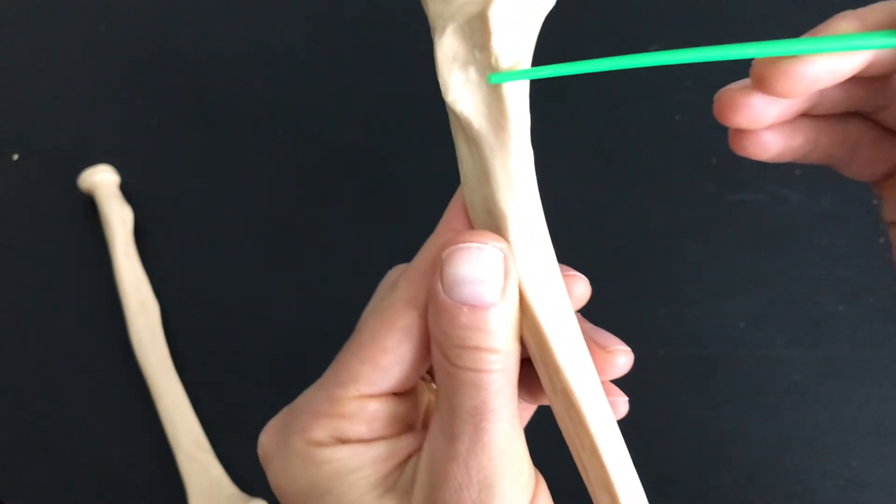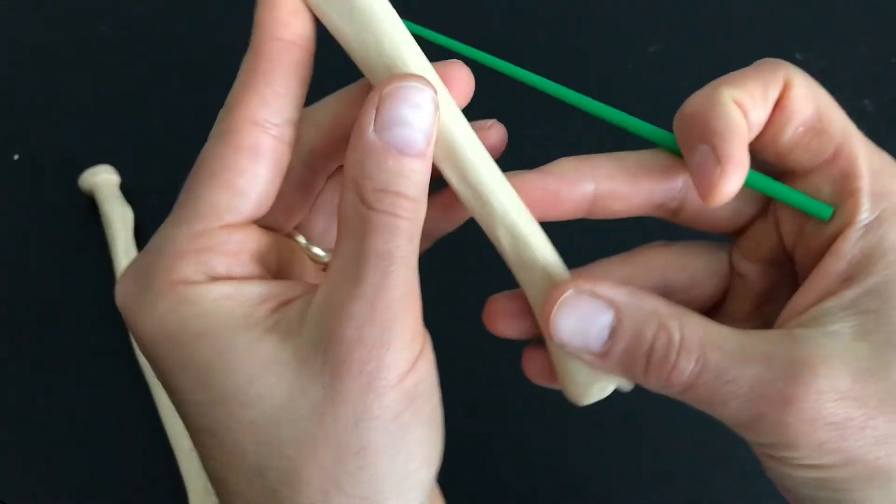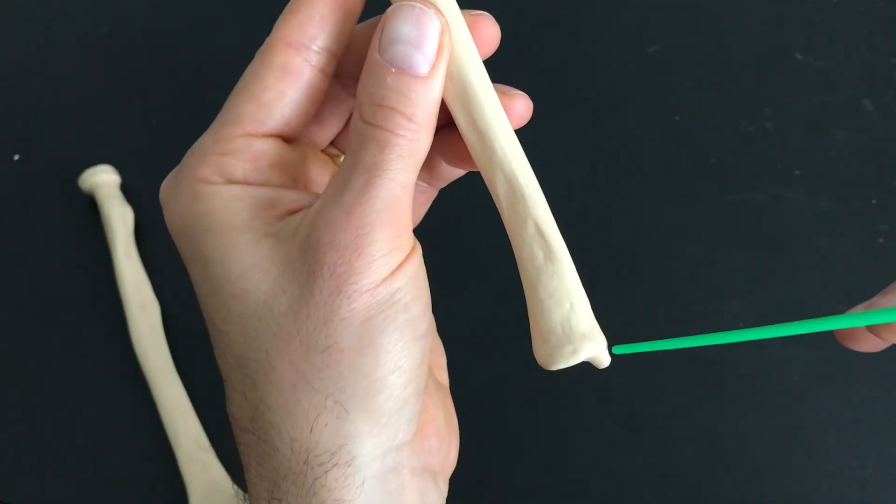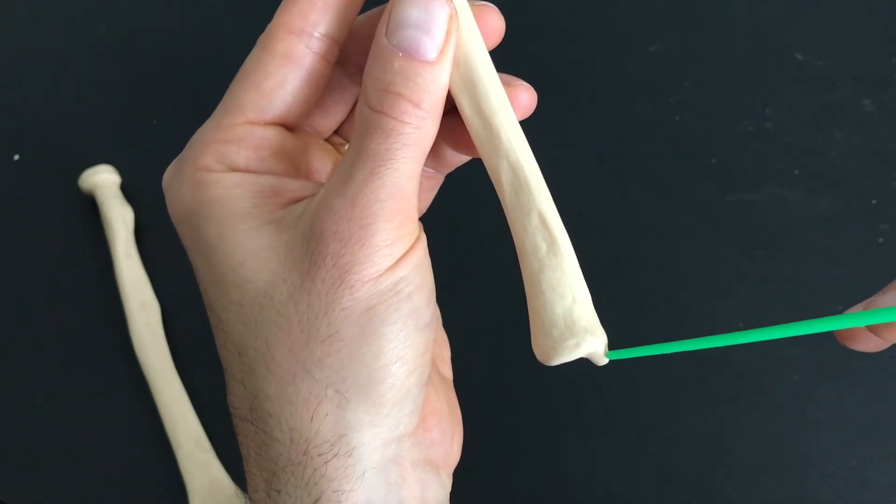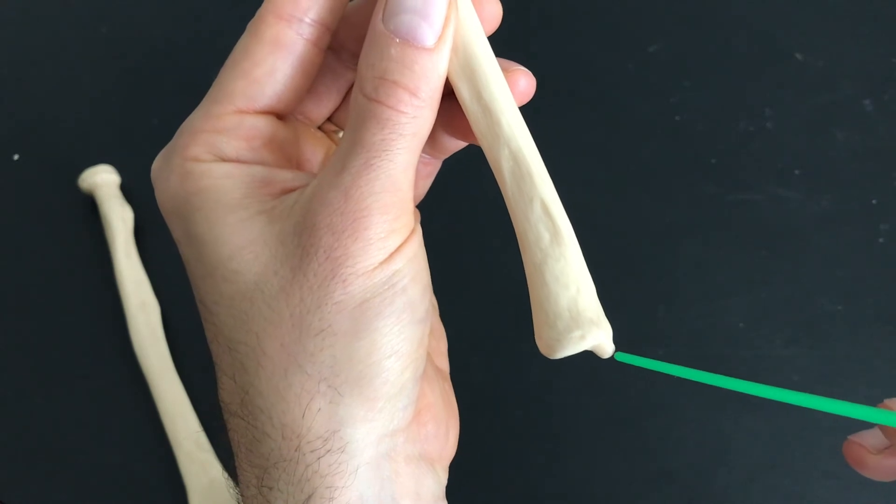Then we come down the diaphysis of the ulna all the way to the south end here. This is the distal end, inferior end, by your wrist. We have the ulnar head and then we have the styloid process.